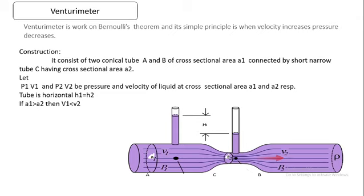The first application is a venturimeter. A venturimeter is a device which works on the principle of Bernoulli's theorem. The simple principle is: when velocity increases, pressure decreases, and as the pressure increases, velocity decreases. The construction of the venturimeter must be known.